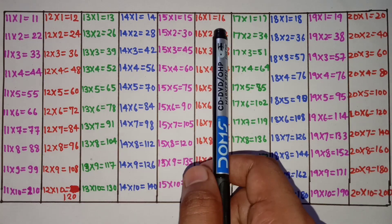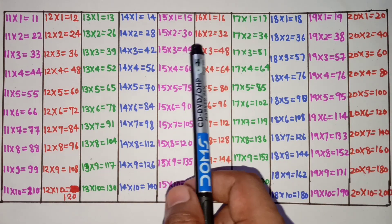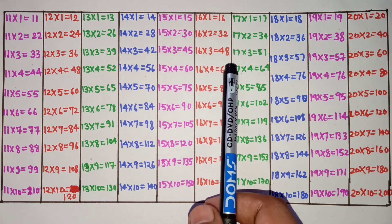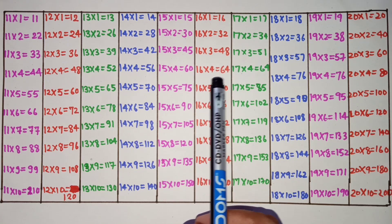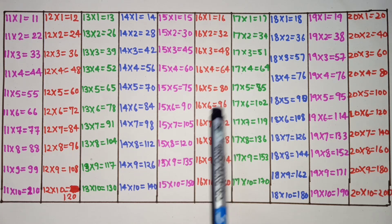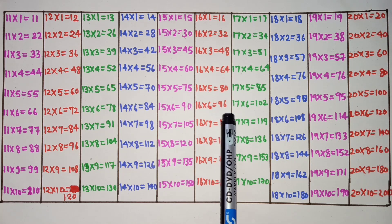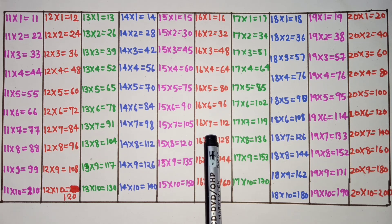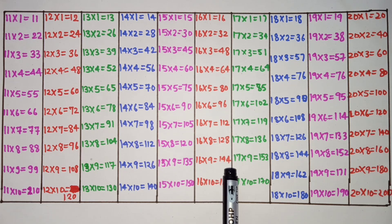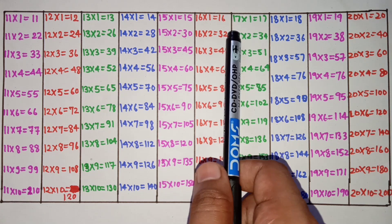16×1 is 16, 16×2 is 32, 16×3 is 48, 16×4 is 64, 16×5 is 80, 16×6 is 96, 16×7 is 112, 16×8 is 128, 16×9 is 144, 16×10 is 160.